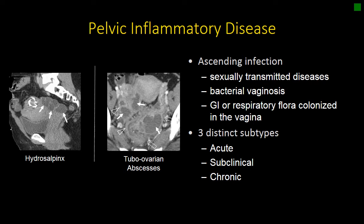There are three distinct subtypes. Acute is the type that we most commonly think about because it's going to present acutely with pain, with infectious symptoms, and we often think of tubo-ovarian abscesses as a form of acute PID.